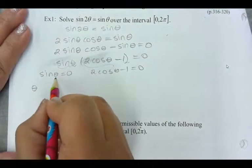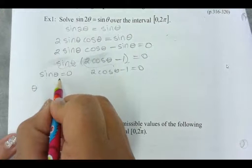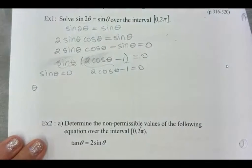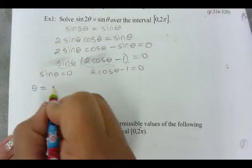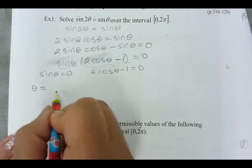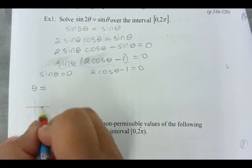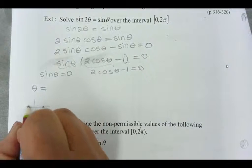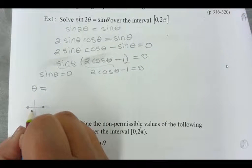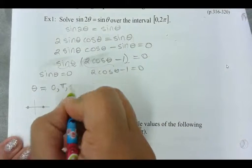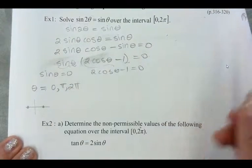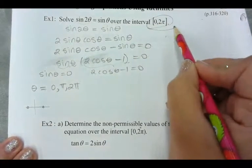Where is sine theta equal to zero? For what values of theta? We've got our y values here and here. So zero, pi, and 2 pi. Just take note of the interval that's here.